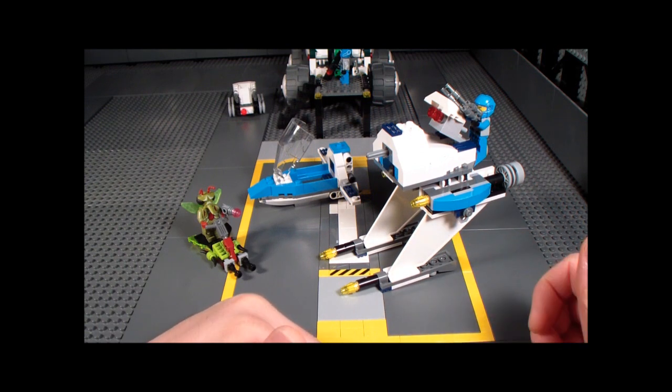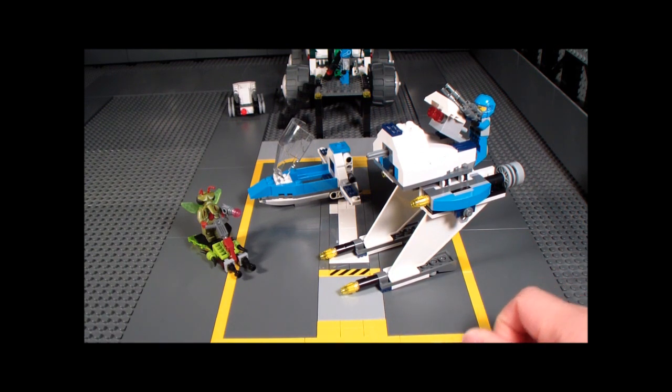We also have the turret mode with flick fire missiles and the adjustable wings. This section right here was something that I learned that I thought was new and that right there is always nice. We have detachable guns for the minifigs and that's a lot for 20 dollars.